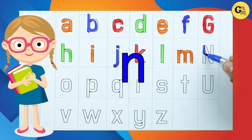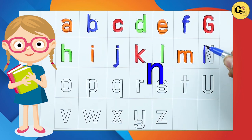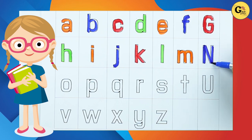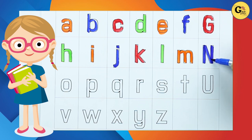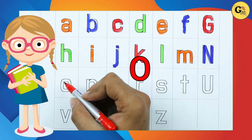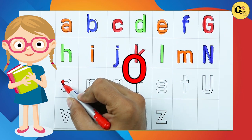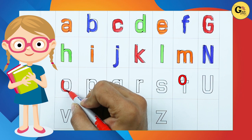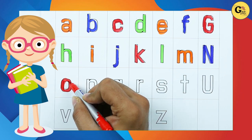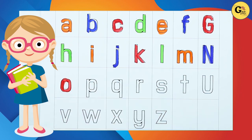N. It's N. N for Nest. It's N. O. It's small O. O for Octopus.